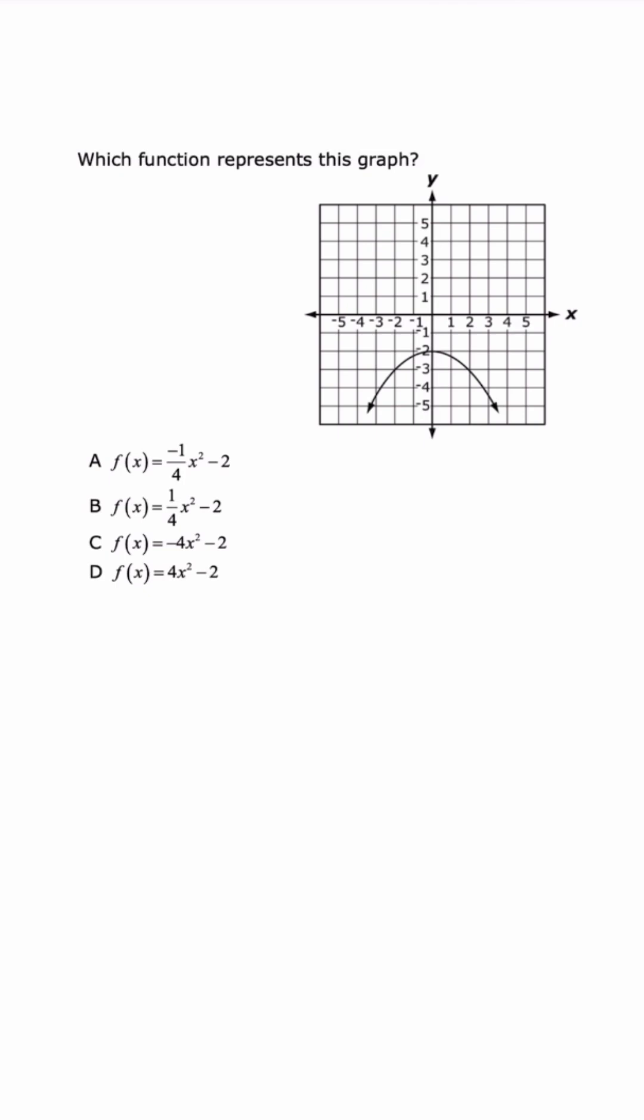Number one, parabola opens down. That means x squared term is negative. So B and D are automatically gone.